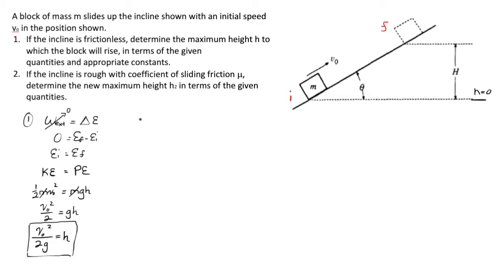But over here in problem 2, things get a little bit more interesting. Because now the incline is rough with a coefficient of sliding friction mu, and now we want H2, a different height. I would think a lower height, since now friction will impede our ability to travel up given the same initial velocity.